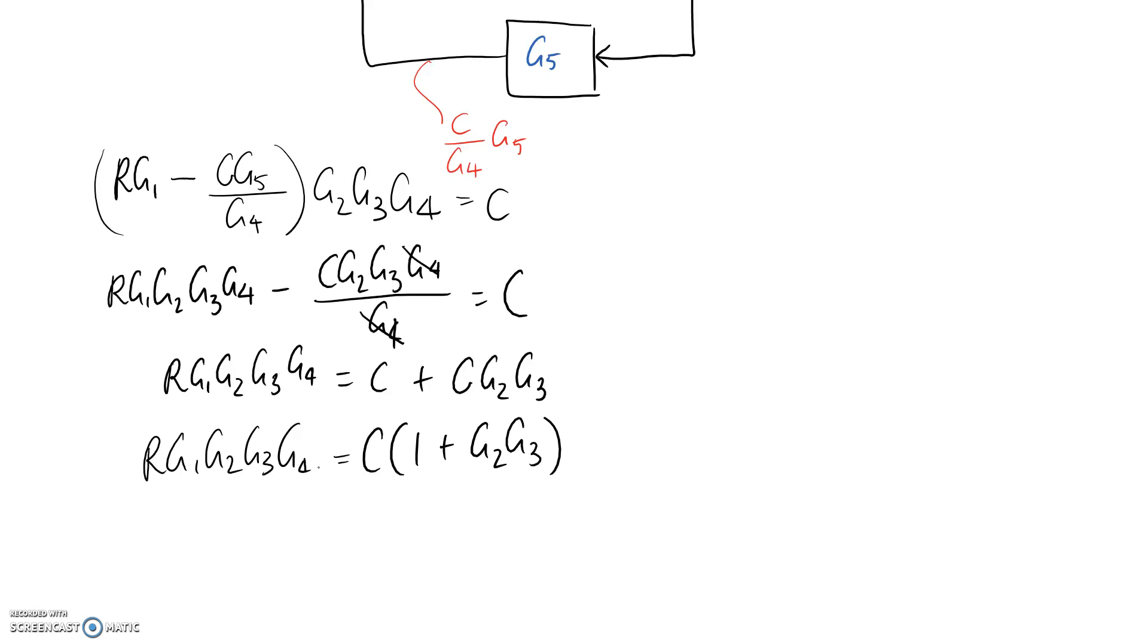And now I should be able to get my transfer function. So c divided by r, this comes down, is equal to this divided by this. So that's equal to g overall. So that's all there is for that question. And I'll see you in another video.